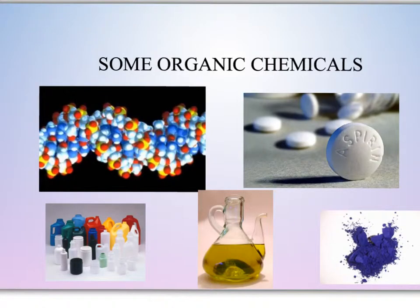Organic chemicals are all around us. They make up foods and foodstuffs, flavorings, fragrances, medicines, polymers, and plastics. They're found in natural products, in clothing such as nylon, in pharmaceuticals, adhesive products, packaging, cosmetics, and the list goes on and on.